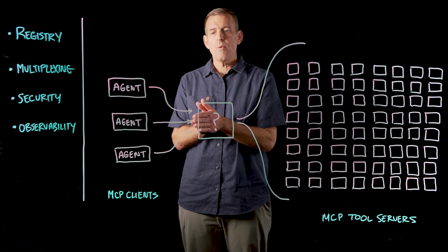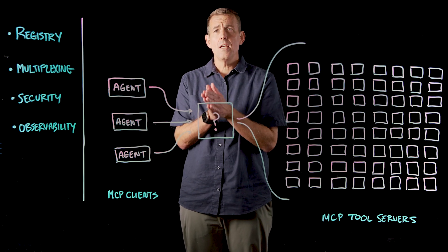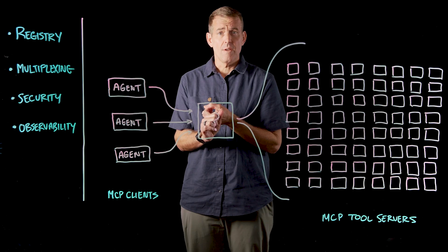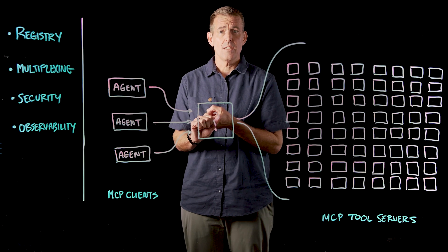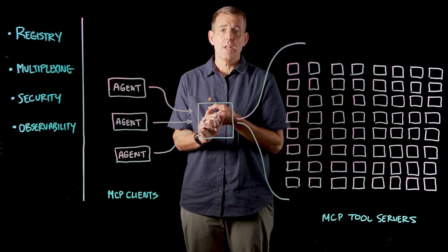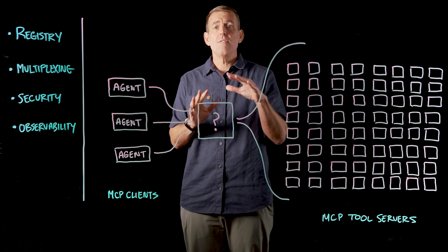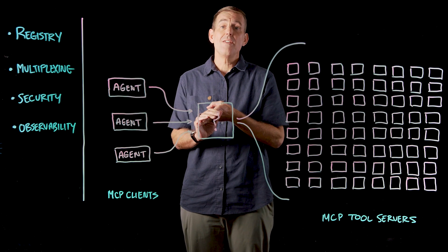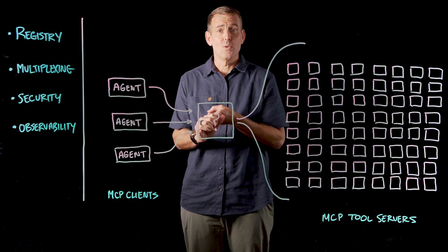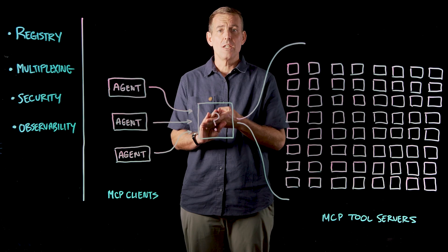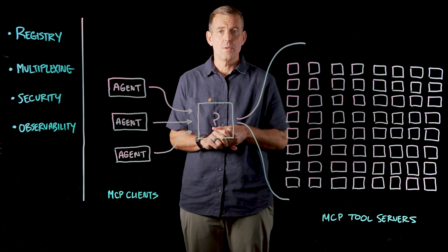Specifically, I want to focus on four key problems in this space. One is how we're establishing a registry of MCP tools that our agents have access to. The second is how I'm multiplexing or slicing individual tools for agents to consume. The third is the very diverse and heterogeneous security landscape around MCP tool servers. And the fourth is around observability and how I'm getting consistent and uniform observability across tools.